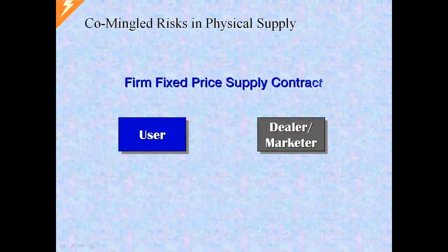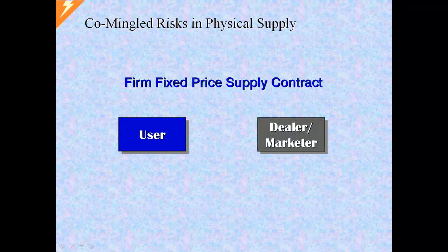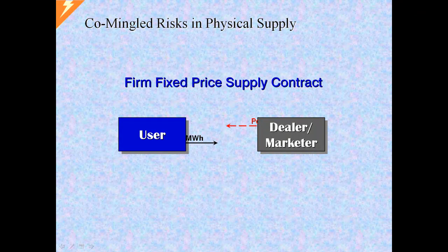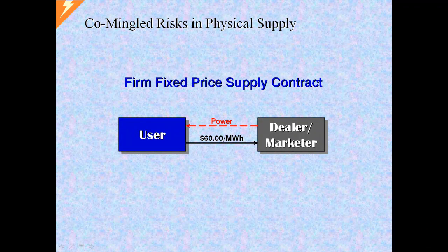In the first module of this series we saw that a simple fixed price supply contract offered protection on two fronts. The user here is buying physical power at a fixed price of $60. The user, a power consumer, is naturally short power risk. The fixed price contract creates a long position as an offsetting hedge.